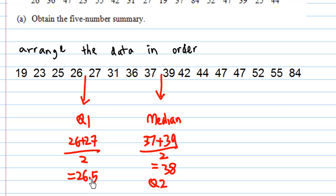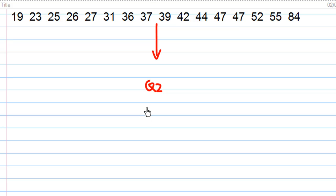Next I want to find Q3. After we have obtained the median, we count there are altogether 8 numbers. So Q3 is 47 plus 47 divided by 2, which gives us 47. So I have obtained Q2 which is 38, Q3 is 47, and Q1 is 26.5.